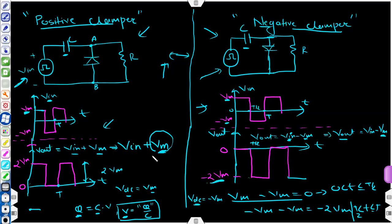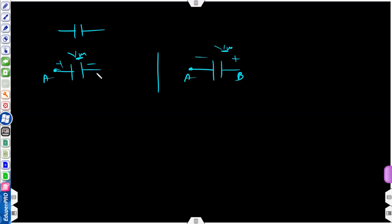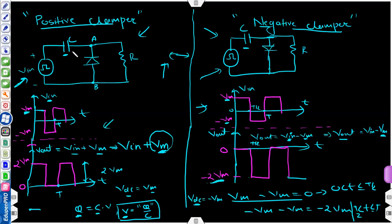The capacitor can get charged to value Vm. The polarity matters: if plus is on the left plate and minus on the right, or vice versa. This polarity will determine whether it contributes to a positive or negative shift at the output. We will derive how this Vm appears on the capacitor - this is the most important thing: to determine the magnitude and polarity on the capacitor.